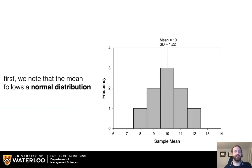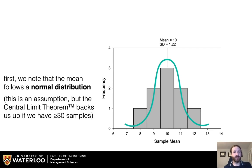First, we note that the mean follows a normal distribution. This is an assumption, but the Central Limit Theorem backs us up if we have 30 or more samples, so it's a reasonable assumption.